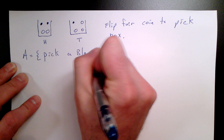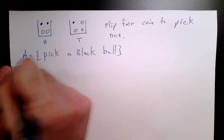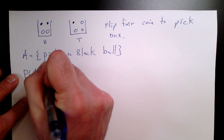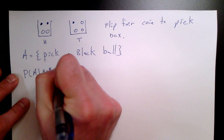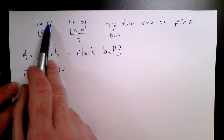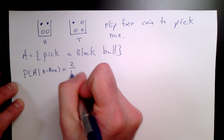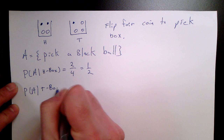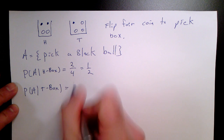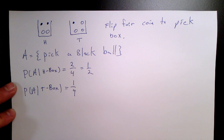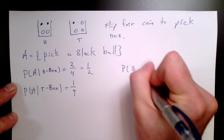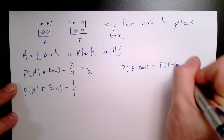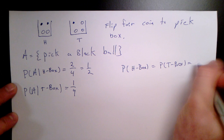It's not immediately obvious what the chance of picking a black ball is in this more complicated procedure. But if you know which box you're picking from, it's easy. The probability of picking a black ball given that we're picking from the H box is straightforward: there are four balls, two are black, so it's 2/4 = 1/2. Similarly, if we know we're picking from the T box, there's one black ball out of four, so it's 1/4. And the probability of picking from either box is 1/2, since it's a fair coin.